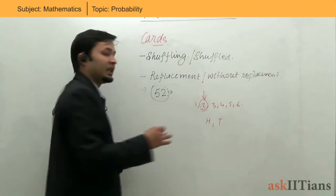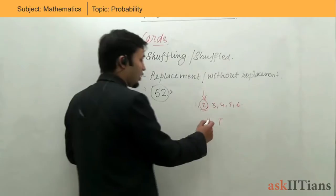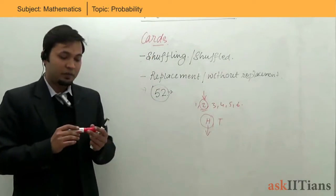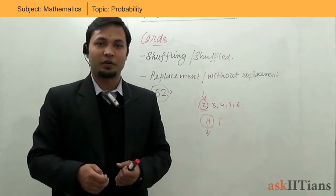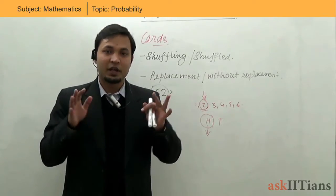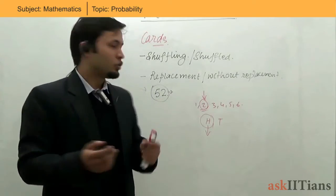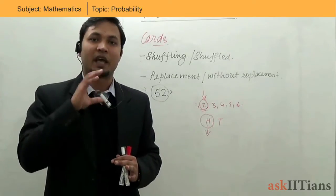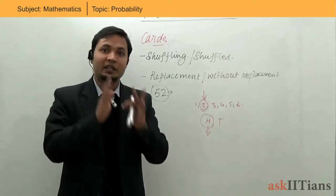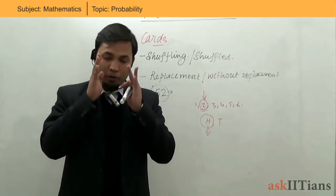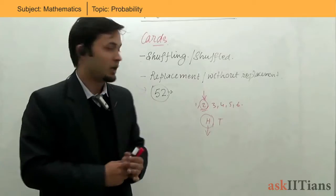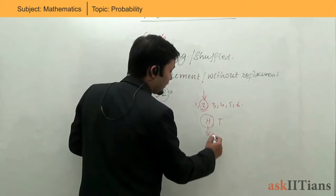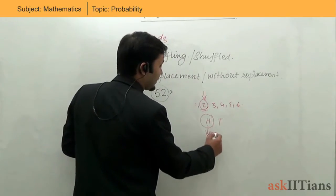The showing of two on a die is basically an event, and getting a head when tossing a coin is also an event. Any particular thing that is happening is termed as an event, and based on that event only we find the probability. For example, what is the probability of getting a head? It would be one by two.